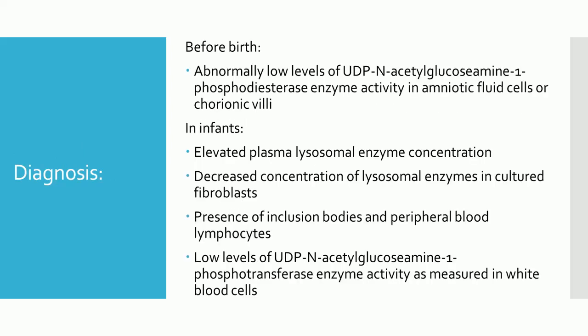Diagnosis: Diagnostic measures can include the following. Before birth: abnormally low levels of UDP-N-acetylglucosamine-1-phosphotransferase enzyme activity in amniotic fluid cells or chorionic villi. In infants: elevated plasma lysosomal enzyme concentration, decreased concentration of lysosomal enzymes in cultured fibroblasts, presence of inclusion bodies in peripheral blood lymphocytes, and low levels of UDP-N-acetylglucosamine-1-phosphotransferase enzyme activity as measured in white blood cells.